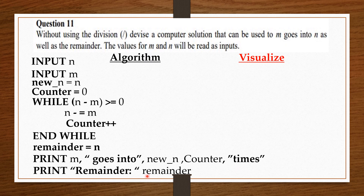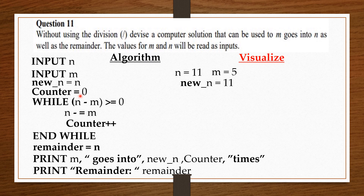Now, let's visualize how this while loop actually works, and how n becomes the remainder at the end of the loop. In our visualization, let's take n to be 11 and m to be 5. From there, we save a copy of n, which is 11, in new_n. So, new_n equals 11, and counter equals 0, which means counter is empty. Now, the condition to enter the while loop is that n minus m is greater than or equal to 0. Since n minus m equals 6 — that is 11 minus 5 equals 6 — we can enter the loop for the first time and run the block of code.